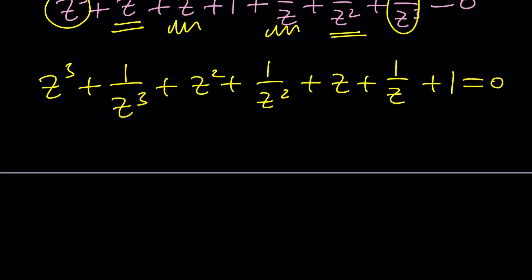So now we get Z cubed plus 1 over Z cubed plus Z squared plus 1 over Z squared plus Z plus 1 over Z plus 1 equals 0. Are you getting what I'm getting yet? Here's the thing. All of these can be expressed in terms of Z plus 1 over Z.